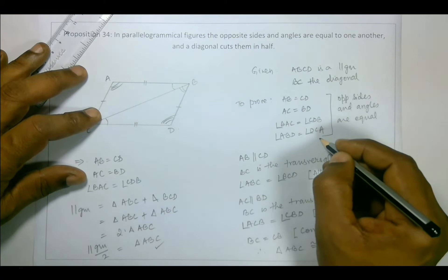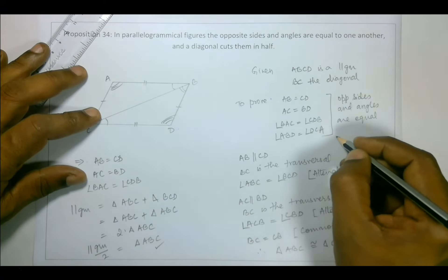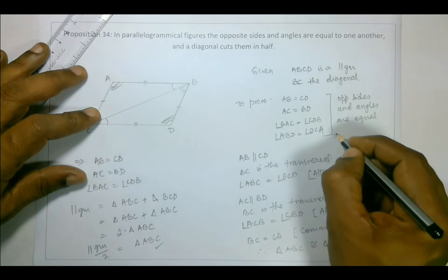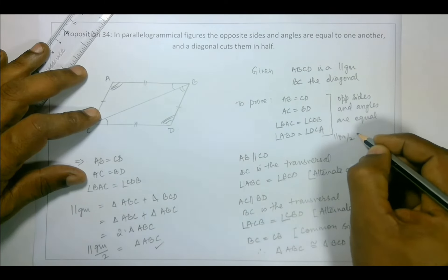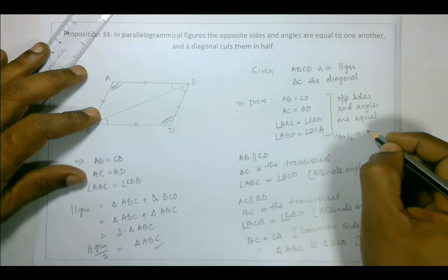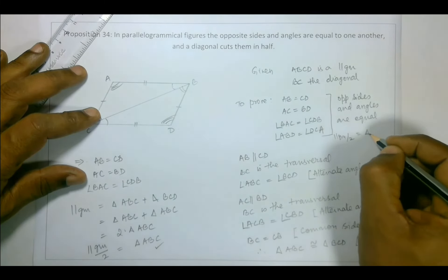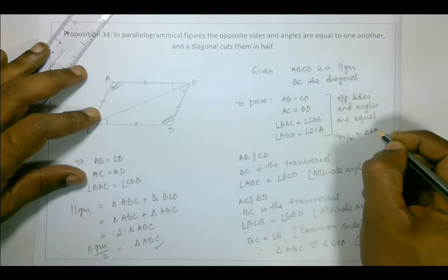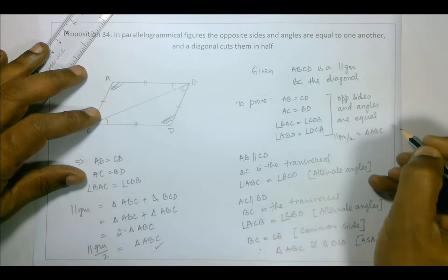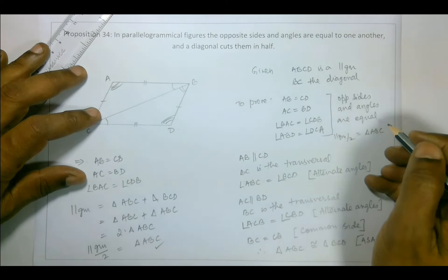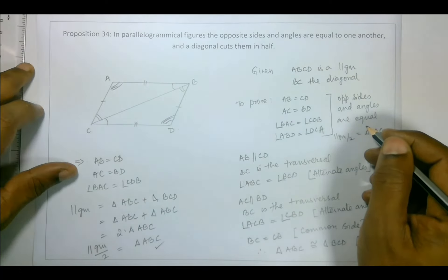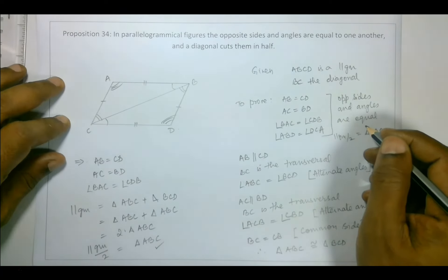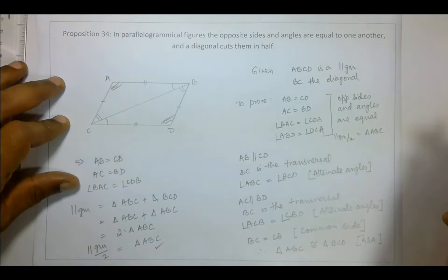So we have proved that when the parallelogram is divided by the diagonal, we get triangle ABC or BCD. That is Proposition 34.